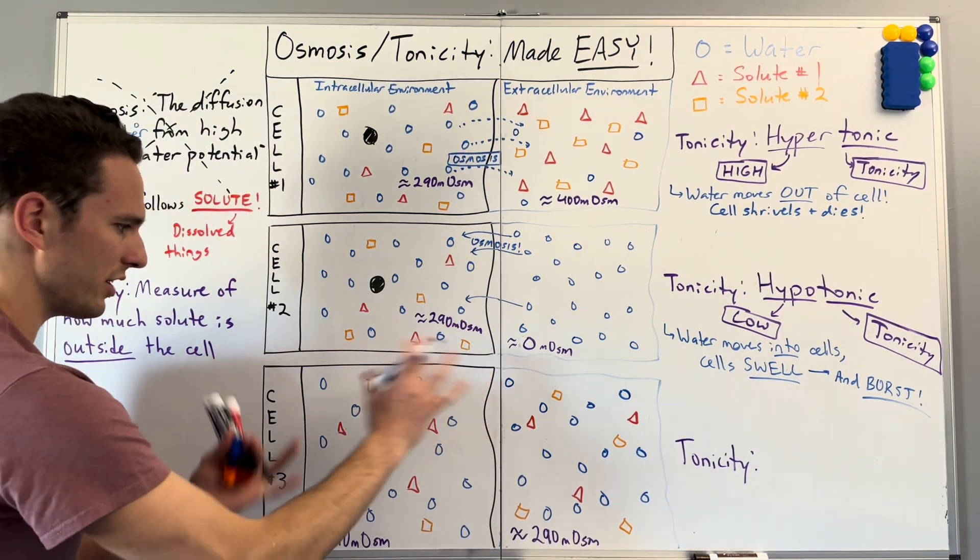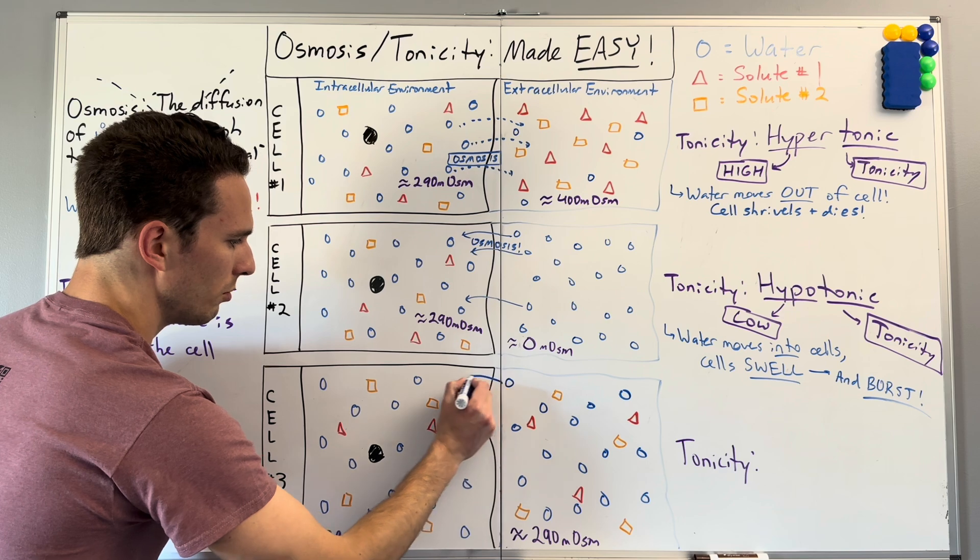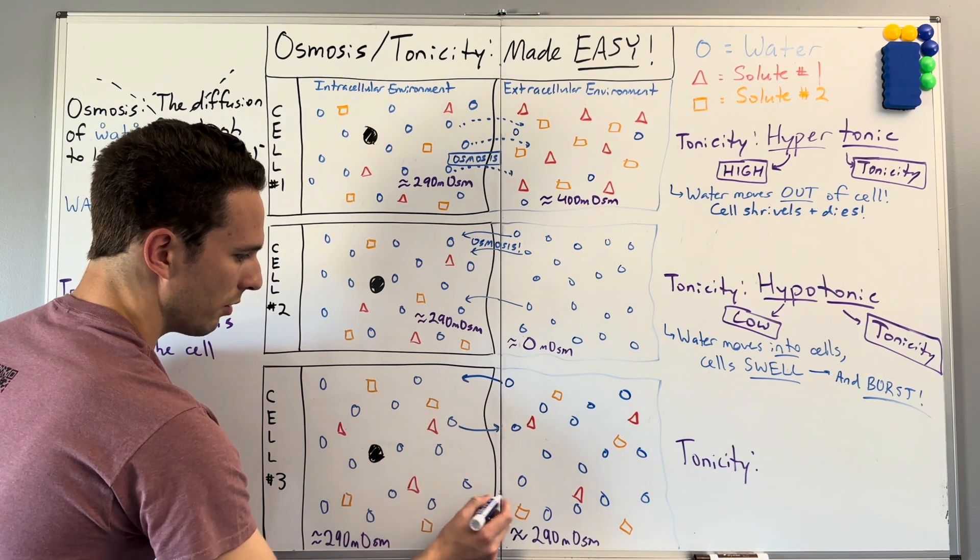So in this case, water and solutes will still be moving around, but it will be an equal movement in and out of the cell.